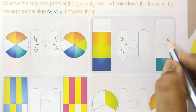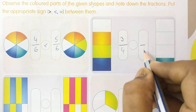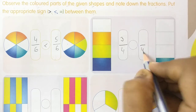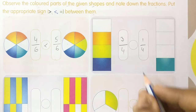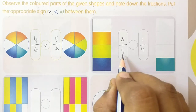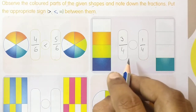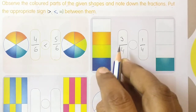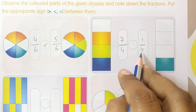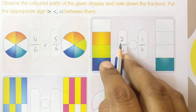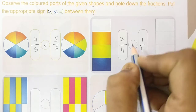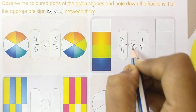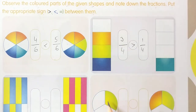Same process for the next shape: 1, 2, 3, 4 — total 4 parts. How many are colored? 1 is colored. So the fraction is 1 by 4. Now see the denominators — both are same. See the numerators: 3 and 1. Which is the greatest? 3 is the greatest, so 3 by 4 is greater than 1 by 4.